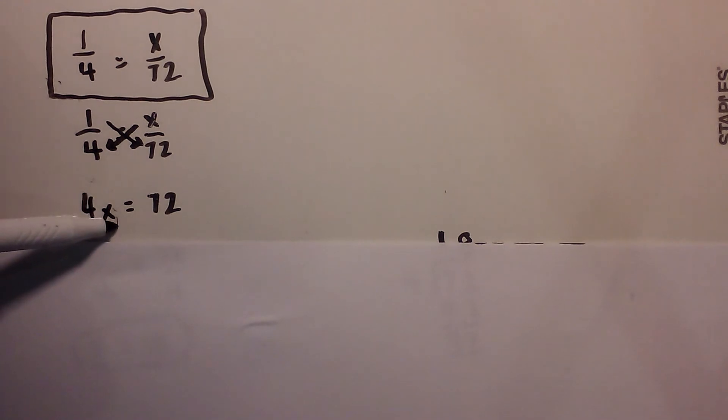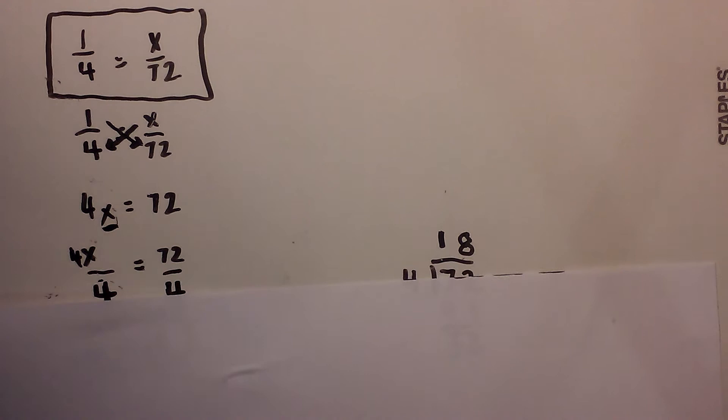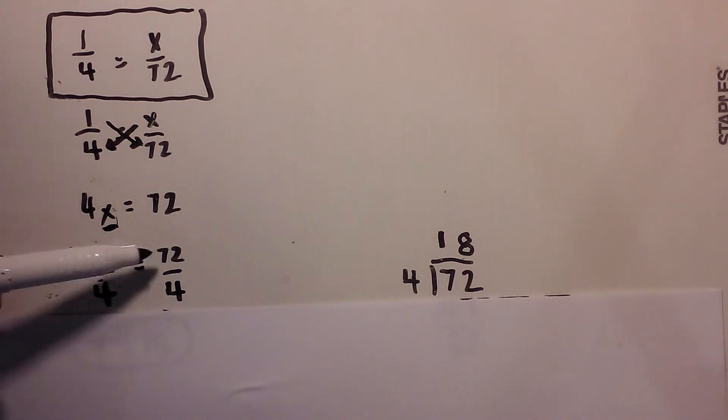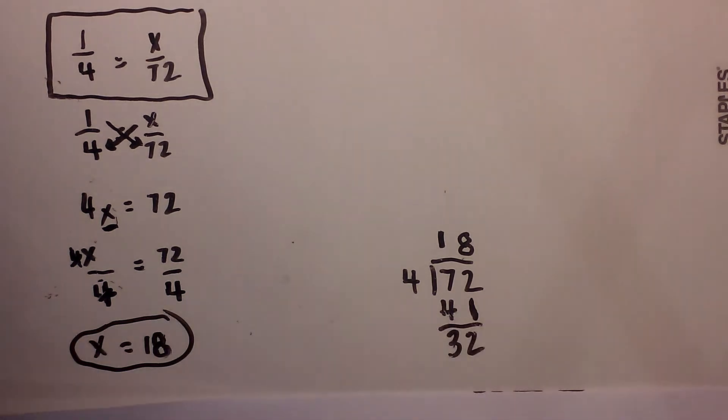Now in order to isolate the x I will divide both sides by 4. So we are dividing 4x by 4 and 72 by 4. The 4s cancel.